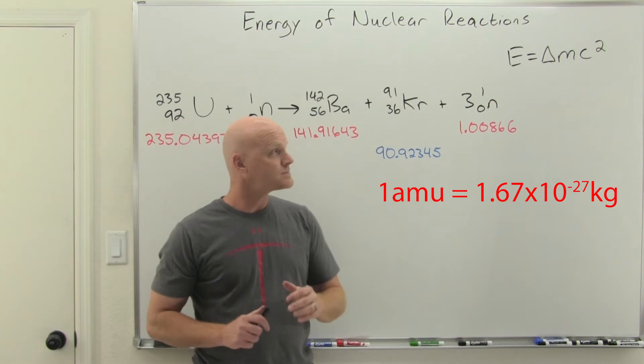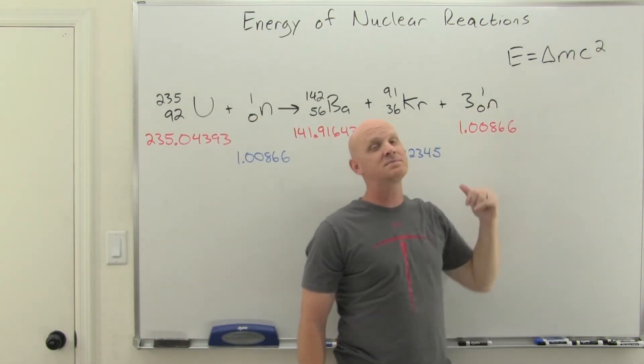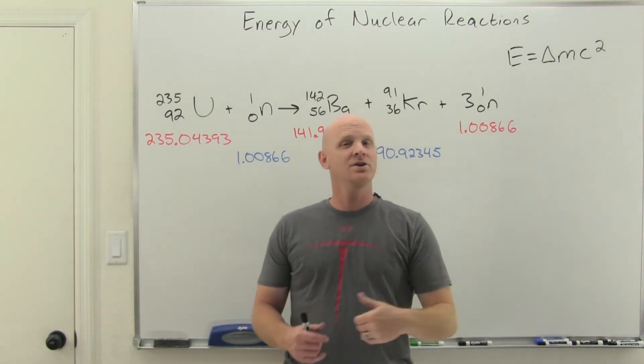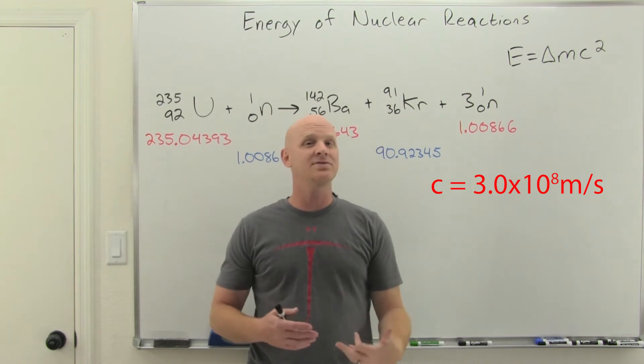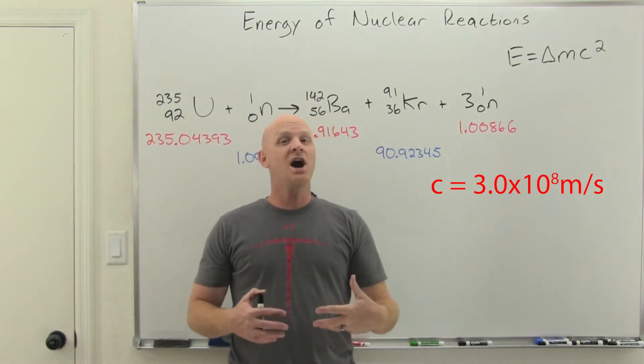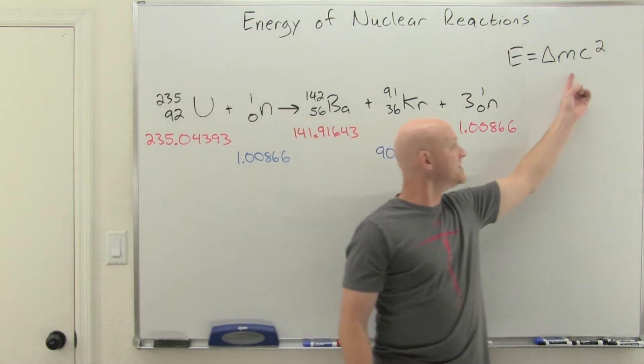We're going to multiply by C squared. C here is the speed of light, and in SI units that's in meters per second: 3.0 times 10 to the eighth meters per second, 300 million meters per second. You're going to square that big old number.